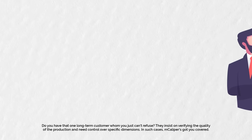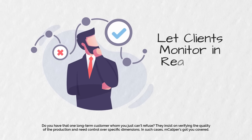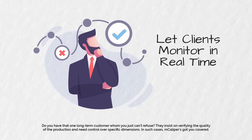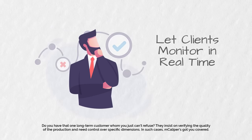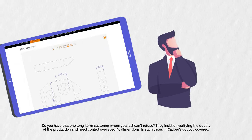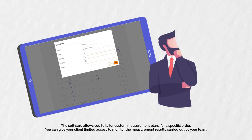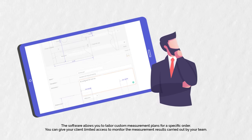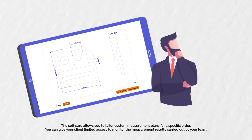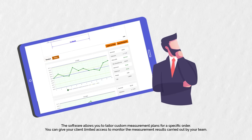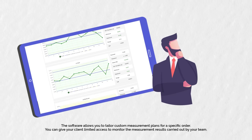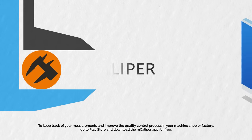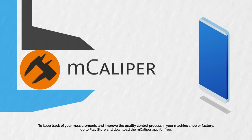Do you have that one long-term customer whom you just can't refuse? They insist on verifying the quality of the production and need control over specific dimensions. In such cases, MCALIPR has got you covered. The software allows you to tailor custom measurement plans for a specific order. You can give your client limited access to monitor the measurement results carried out by your team, to keep track of your measurements and improve the quality control process in your machine shop or factory.